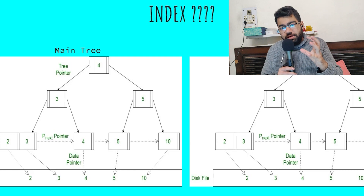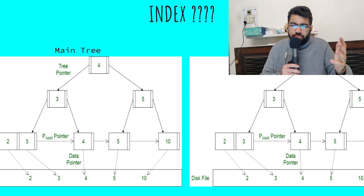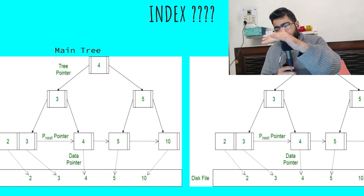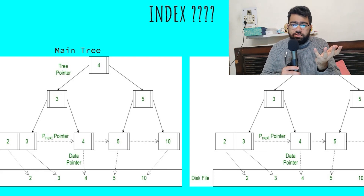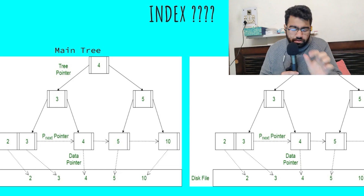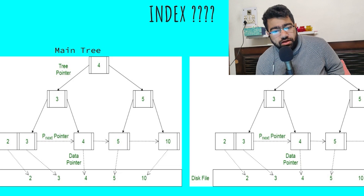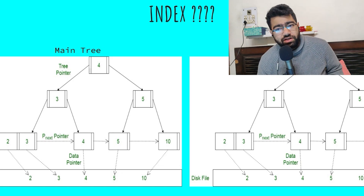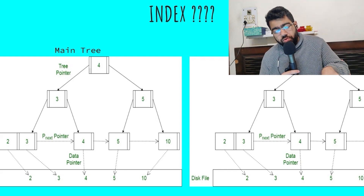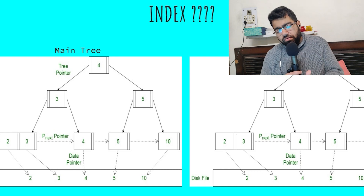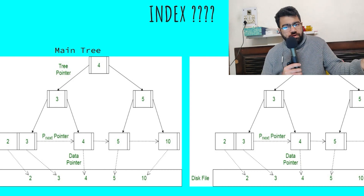When you create an index in a SQL database, another B+ tree is created, indexed on that particular column rather than the primary key. Now the question is: will you store the full row data again at the leaf node of this index tree? That would mean duplicating all the data. You can do that if you have enough space, but another approach is to store just a pointer to the actual data at the leaf node. These are two different approaches you can take.